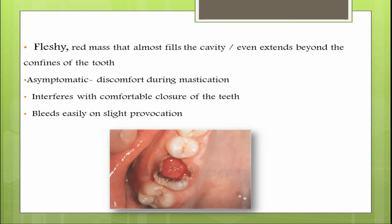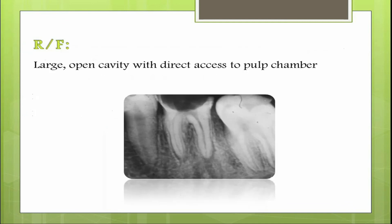Chronic hyperplastic pulpitis is asymptomatic — the patient has no severe pain, only mild discomfort on tooth closure and during mastication. The pulp polyp may bleed easily on slight provocation depending on the degree of vascularity and epithelialization. The polyp has granulation tissue covered by stratified squamous epithelium derived from adjacent gingival tissue or desquamated oral tissues. On radiograph, a large open cavity with loss of coronal structure and direct access to the pulp chamber is seen, with a normal periapical area.